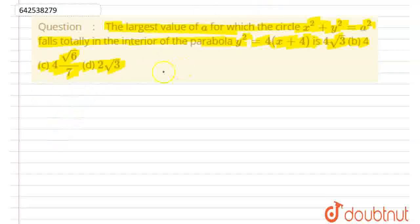Now, if we just replace y square equal to A square minus x square in this equation, that is, A square minus x square equals 4x plus 16.